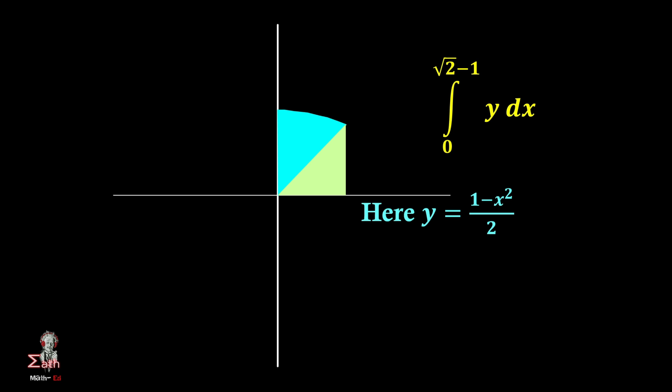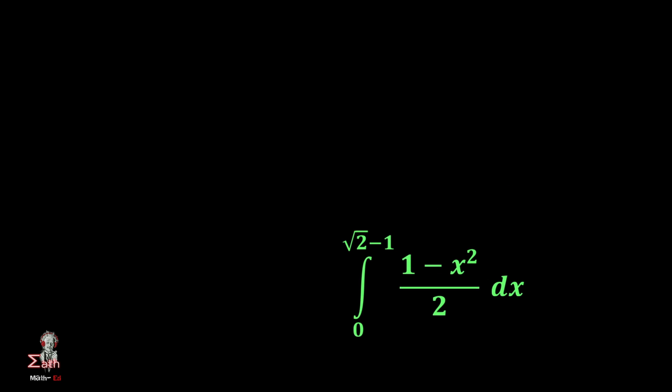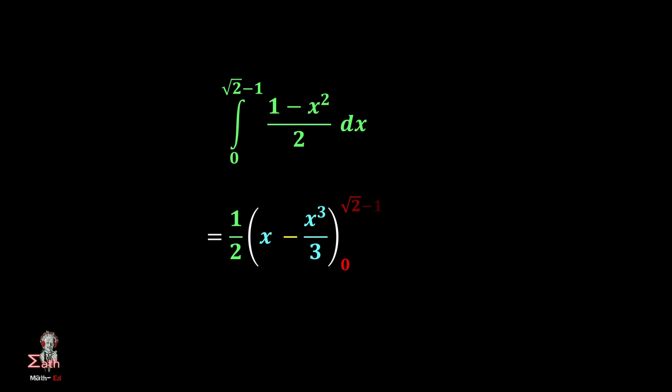So the total area bounded can be written as integration from 0 to √2 - 1 of (1 - x²)/2 dx. And simply this integration is equal to 1/2(x - x³/3) and limit is from 0 to √2 - 1. After evaluating it we must get the value as (2 - √2)/3.